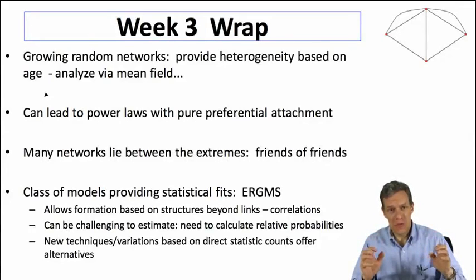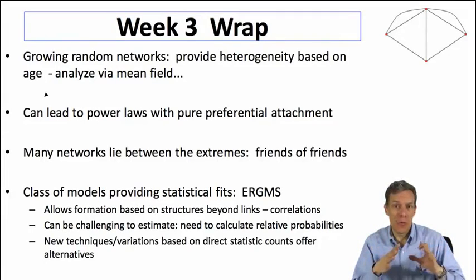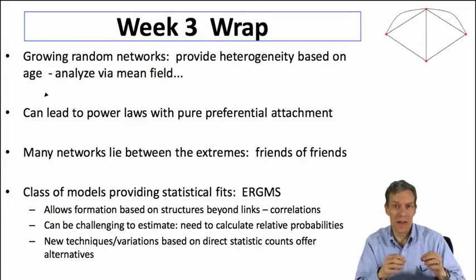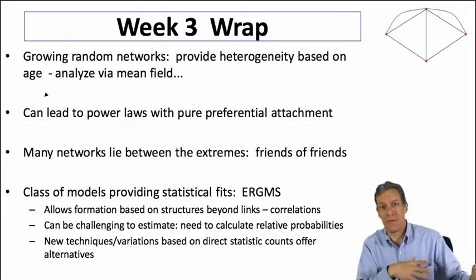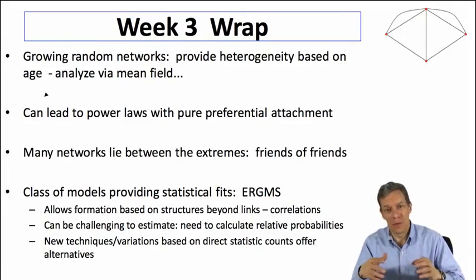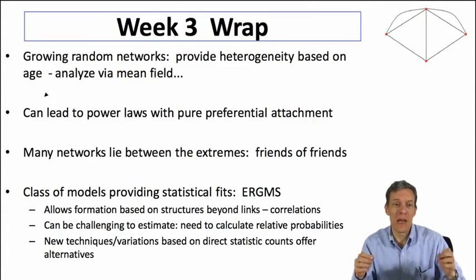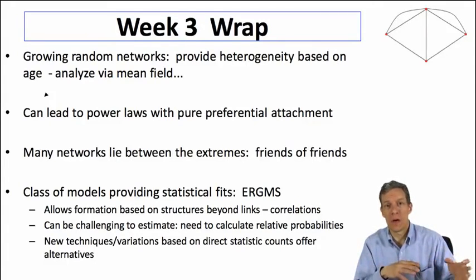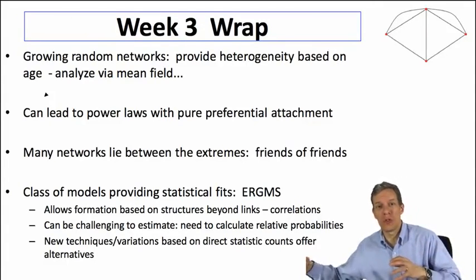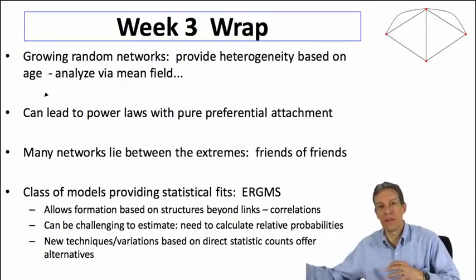In terms of growing random networks, what we saw was beyond just providing realism in terms of different nodes being born at different times, they provided a heterogeneity based on age, which allowed older nodes to have higher degrees.